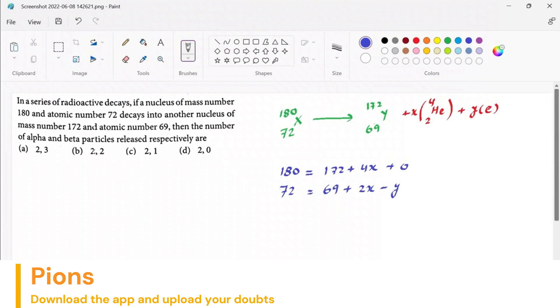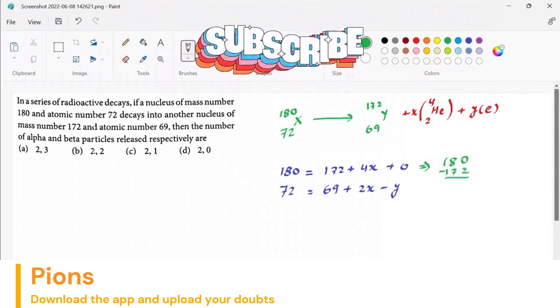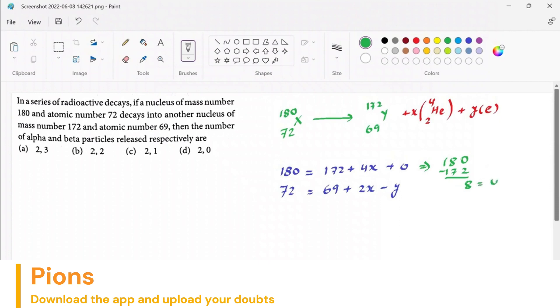So this implies 180 minus 172, that equals 8. So 8 equals 4x, so 2 equals x. X we got value as 2.